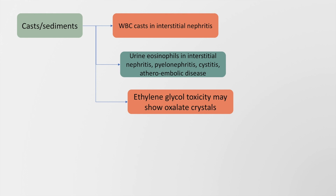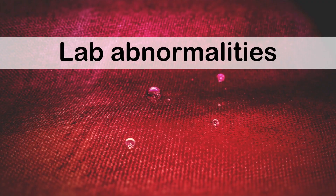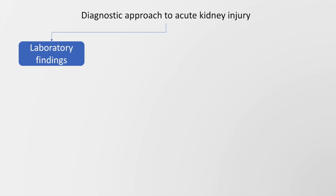Ethylene glycol toxicity may show oxalate crystals in the urine. Uric acid crystals are seen in tumor lysis syndrome. Muddy casts are seen in acute tubular necrosis and RBC casts in acute glomerulonephritis.